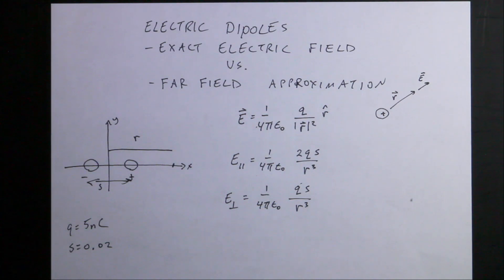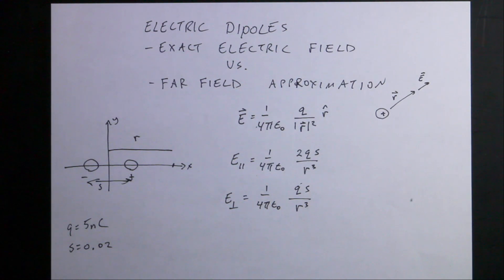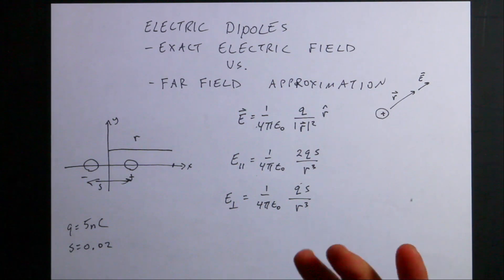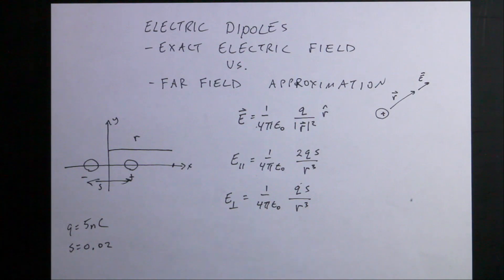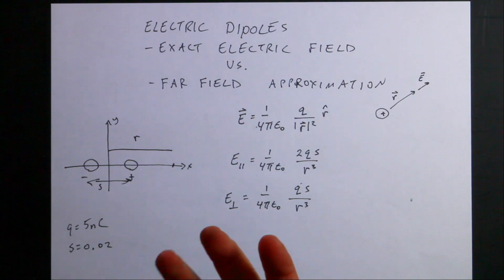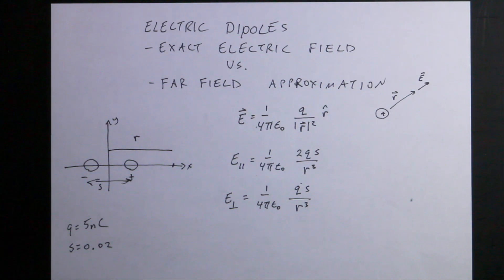There are actually two ways to calculate the electric field due to a dipole. A dipole is a pair of equal and opposite charges separated by some distance, and it turns out it shows up all the time. We can approximate a water molecule as a dipole, or approximate some things as dipoles when they're placed in an electric field, so it's an important concept.